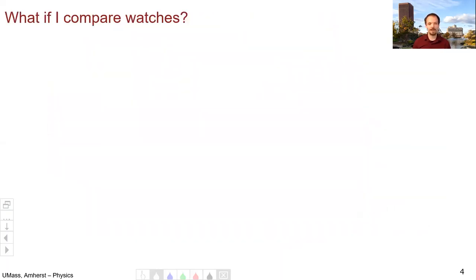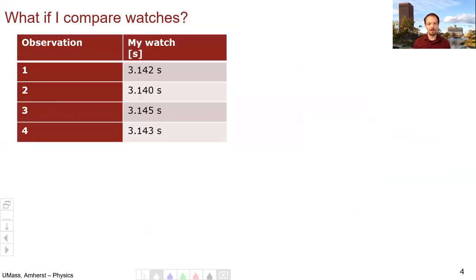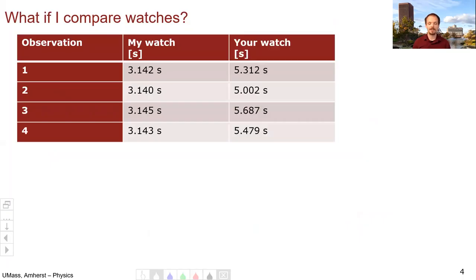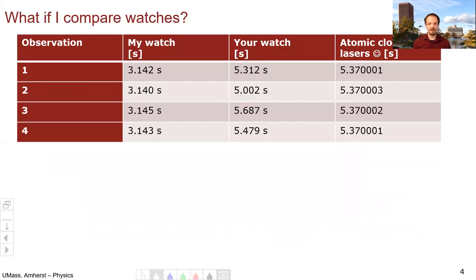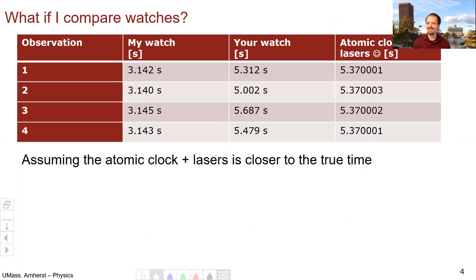So let's repeat the experiment now, not only with my watch but with your watch. So here are my four observations. Now let's have you repeat them with your watch, and you get these four numbers. And then we'll repeat it again with an atomic clock and some lasers, the fanciest setup we can possibly imagine, and we'll get these answers. Now remember, the true time is still actually unknowable, but we're going to assume that the atomic clock and lasers are closer to the true time.